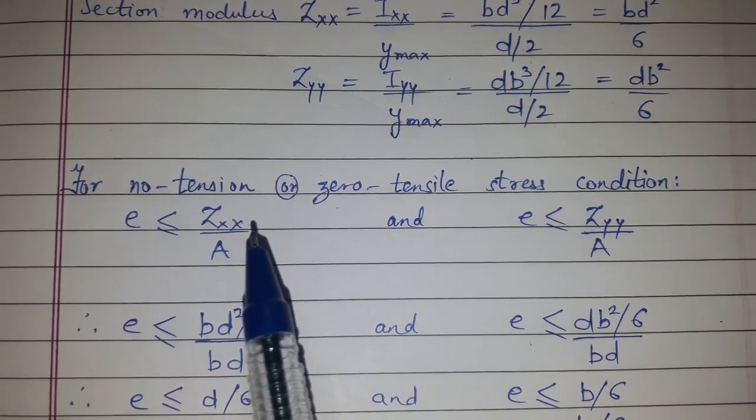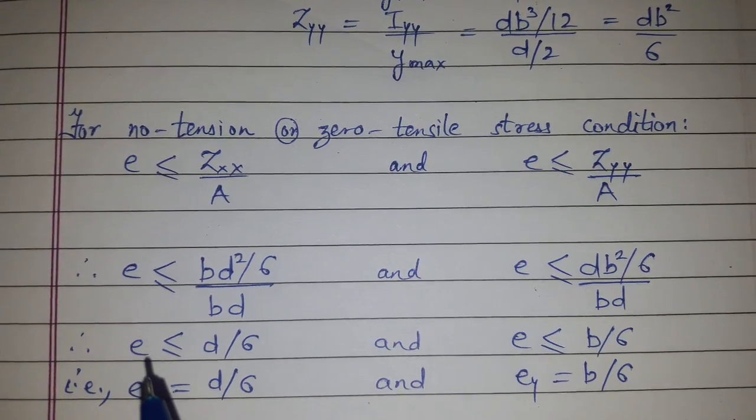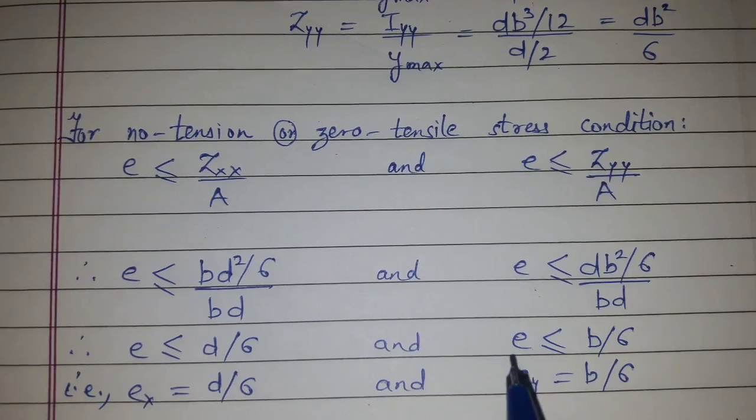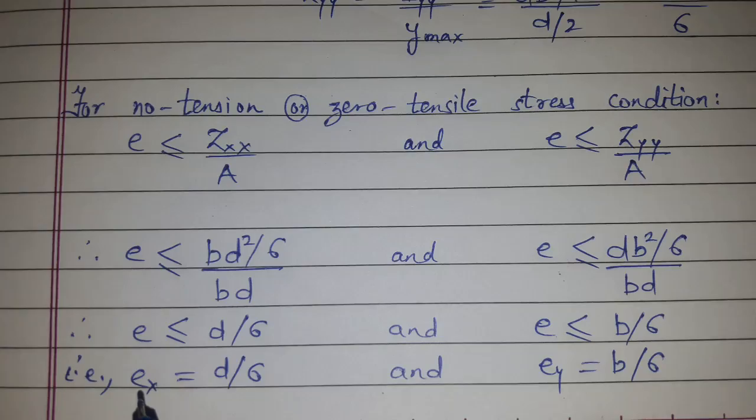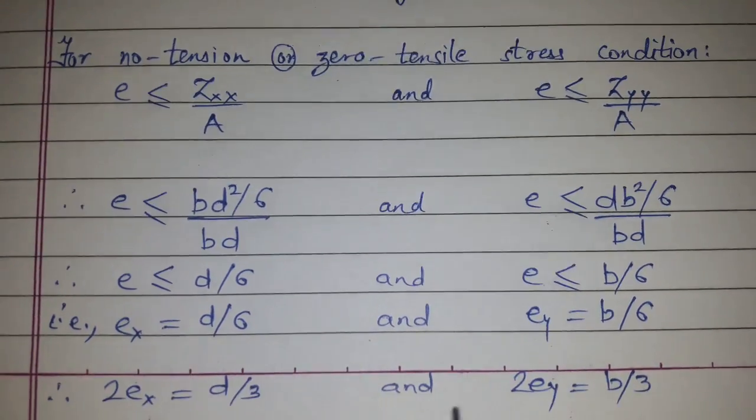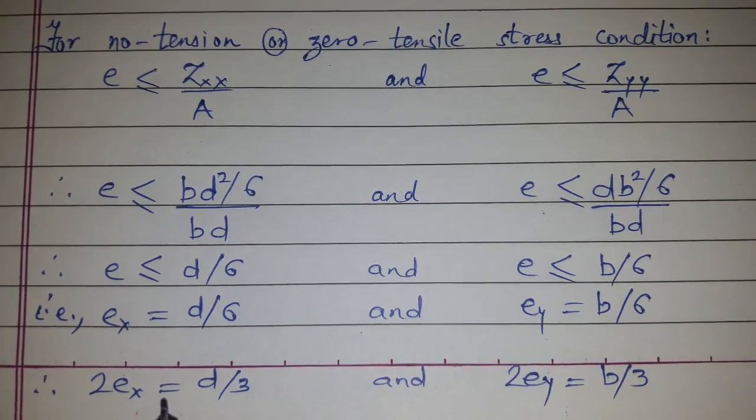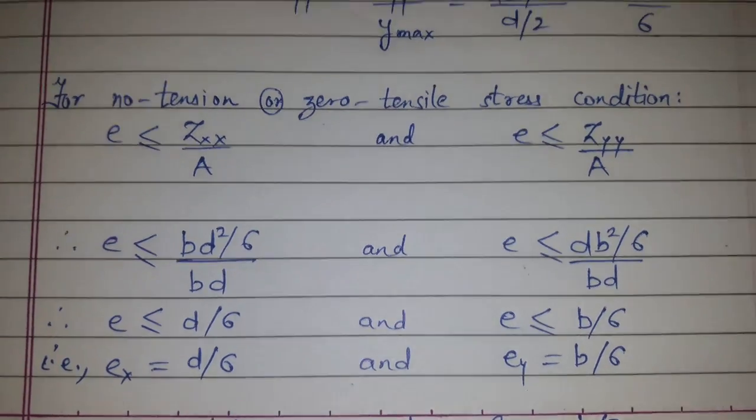When we put the values of zxx and A, we get e ≤ d/6 and e ≤ b/6. If we multiply by 2, we get 2ex = d/3 and 2ey = b/3.